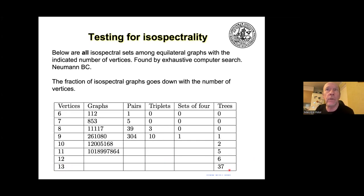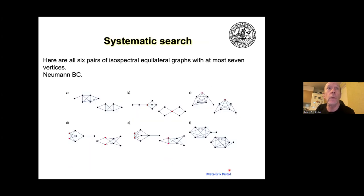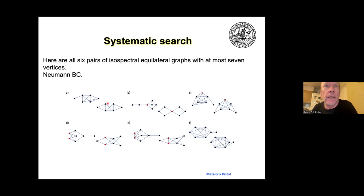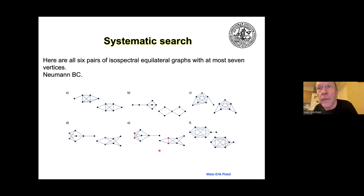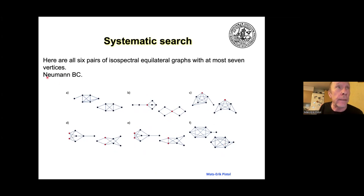Now I give some examples of the first isospectral pairs. This pair has six vertices and these are isospectral — that's the single example with six vertices, there are no more. At seven vertices we have this example, this pair, this pair, this pair, and this pair — all five have seven vertices, and that's all of them with seven vertices that are isospectral. I still use Neumann boundary conditions — the absolute most common, Neumann-Kirchhoff — and Neumann also at pendant edges.